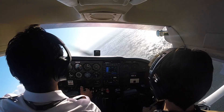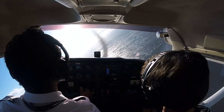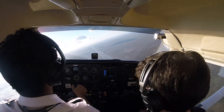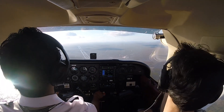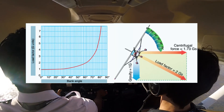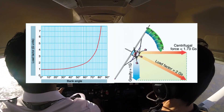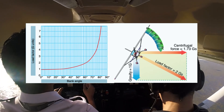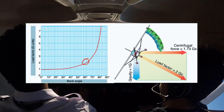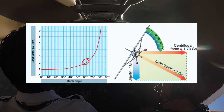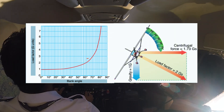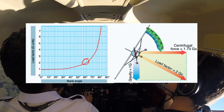When we enter a steep turn we experience a few interesting forces and effects. First, there's an increase in load factor — or G-forces — which grows as we bank. At a 45-degree angle of bank this load factor reaches around 1.4, and at 60 degrees it doubles to 2.0. This means that both you and the airplane feel twice as heavy, making precise control even more critical.